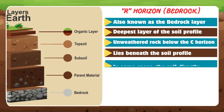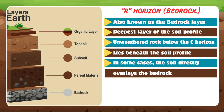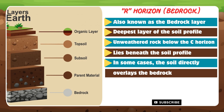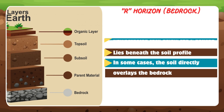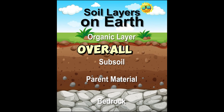R horizon — it is also known as the bedrock layer, and this is the deepest layer of the soil profile. It is the unweathered rock below the C horizon — the solid base of the earth. This layer lies beneath the soil profile; in some cases the soil directly overlays the bedrock, while in others it may be deeply separated.